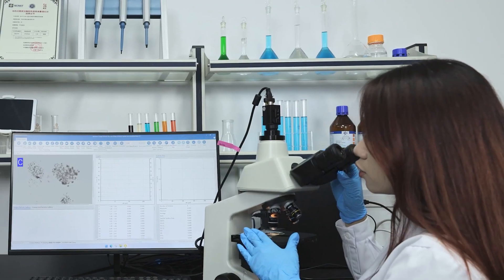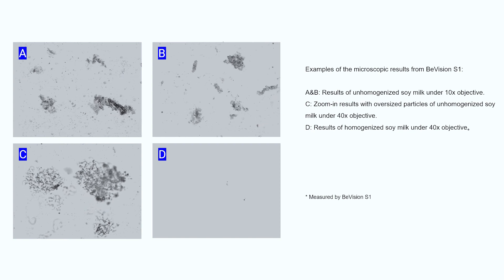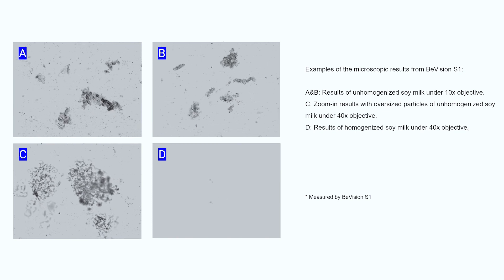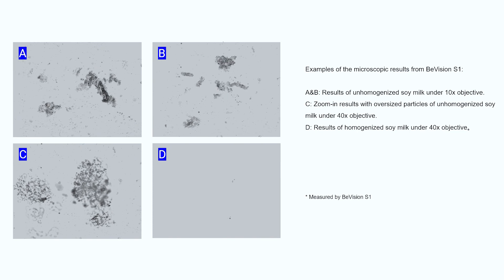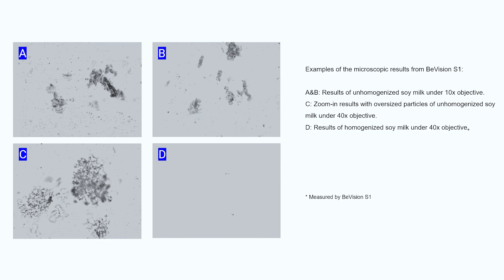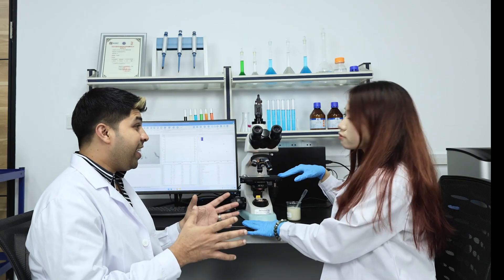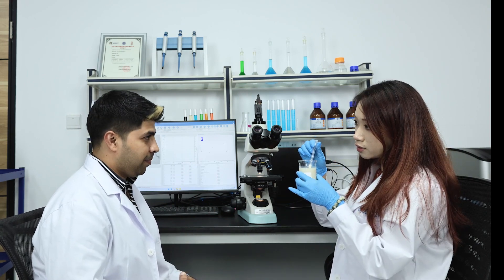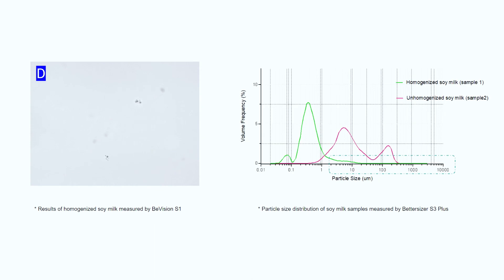So I guess these are what you want to see. The Bivision S1 displays the coarse particles in the unhomogenized soya milk with sizes of approximately 13 microns according to figures A, B, and C. These particles, which are arranged in spatially organized patterns, can be defined as the aggregation of soybean protein. Why is figure D so blank? Remember for the homogenized soya milk — there are much fewer particles shown in the range above 1 micron, since S1 focuses on coarse particles. You can see only a few dots in figure D, which corresponds to the result of the F3 Plus.